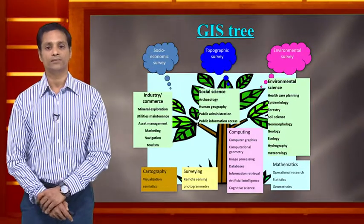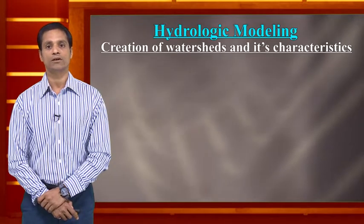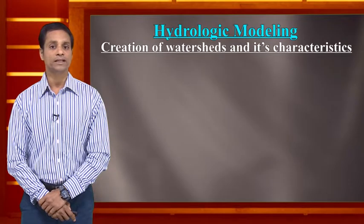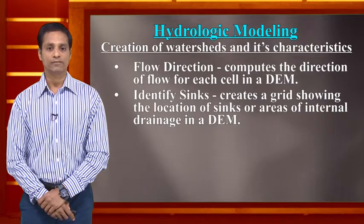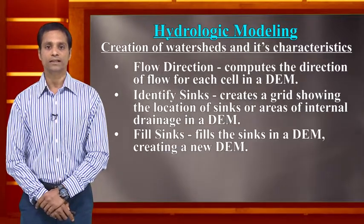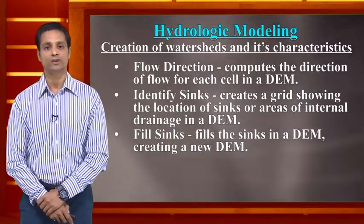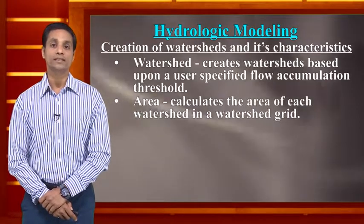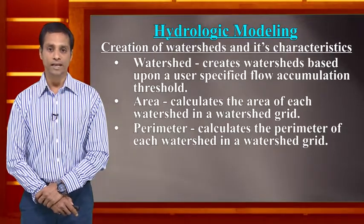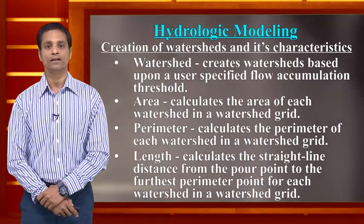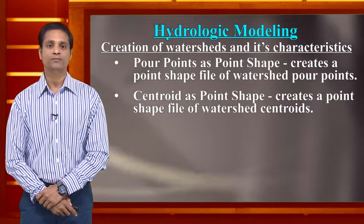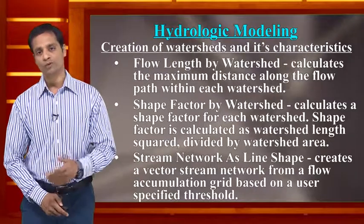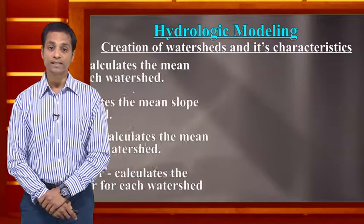For hydrologic modeling, GIS features include: flow direction identification, identification of sinks, filling sinks to divert water and prevent flooding, flow accumulation, watershed management, total area calculations, perimeter measurement of water-affected areas, river body length measurement, pour points, centroids, flow length measurements, flow length by watershed, shape factors, and stream networking.